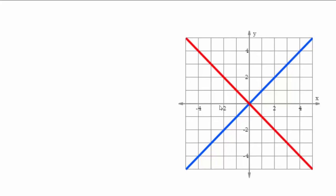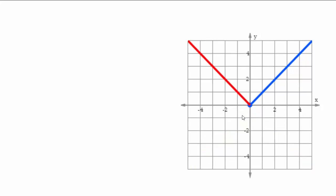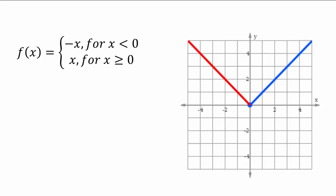Let's take another example. I have y equals x and y equals negative x — two functions. If I erase the bottom parts of both, what does that mean algebraically? The notation is f(x) equals negative x for x less than 0, and x for x greater than or equal to 0. Do you recognize this function? Whether x is positive or negative, you always get the positive part — the distance from 0 on the number line. This is called the absolute value function.